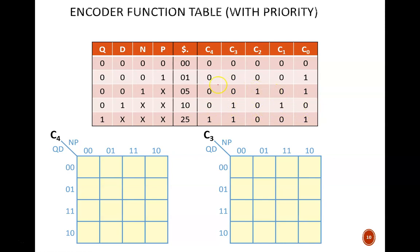This pattern continues throughout the table. The penny signal only matters if all of the other coin signals are low. In that case, the output equals 00001. And of course, when no coin signals are active, the output should equal 0.